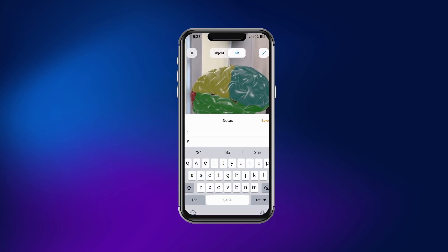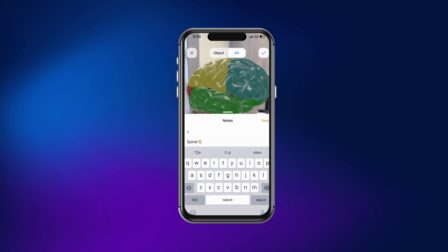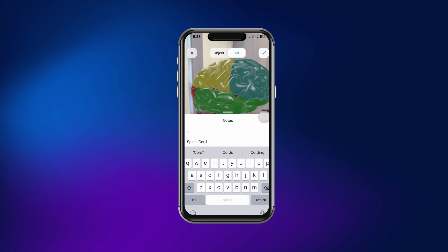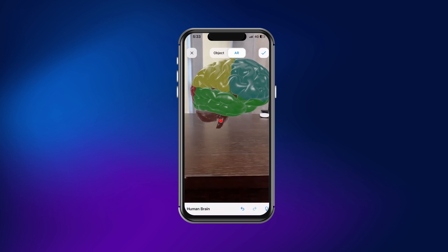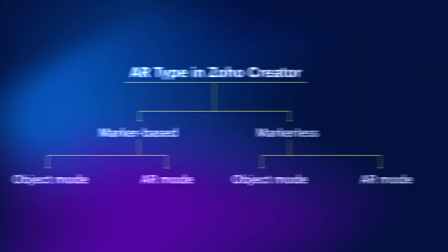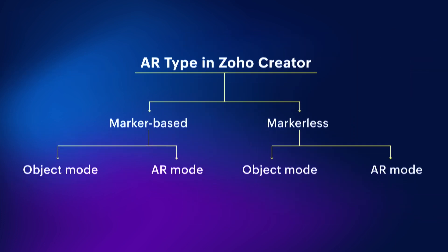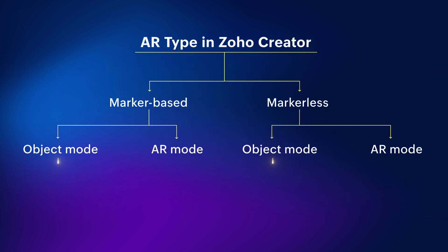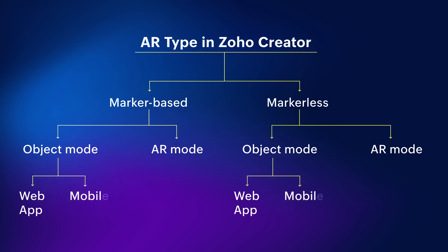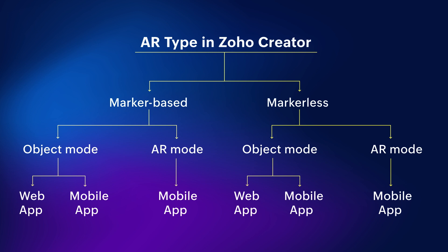Additionally, you can add annotations to specific parts of the model in both modes. It's worth noting that object mode can be accessed from both web and mobile apps, while AR mode is only accessible on smartphones and tablets with cameras.